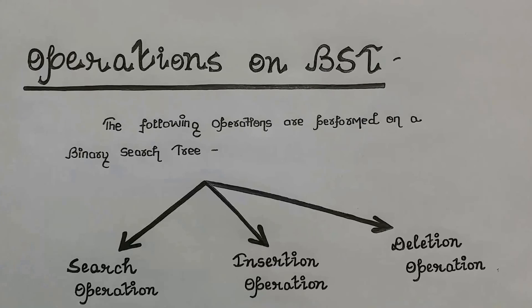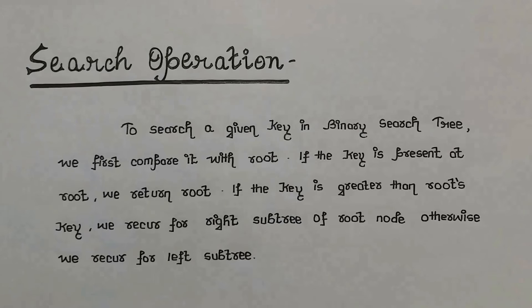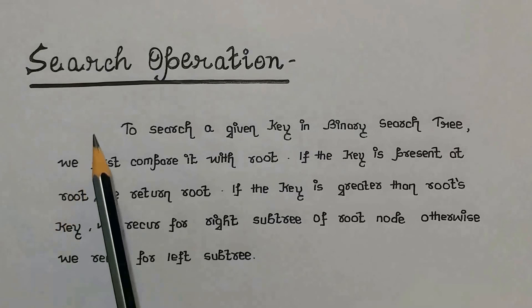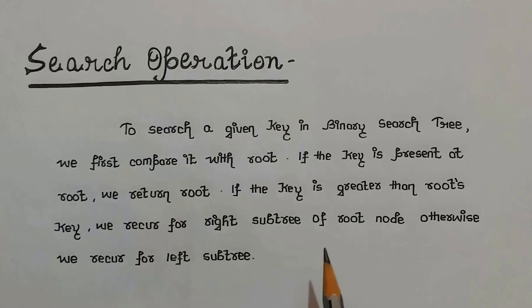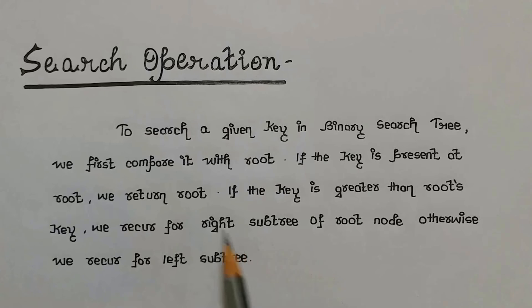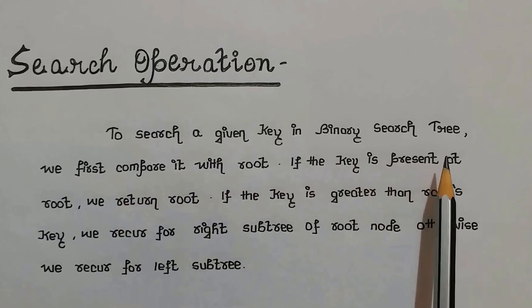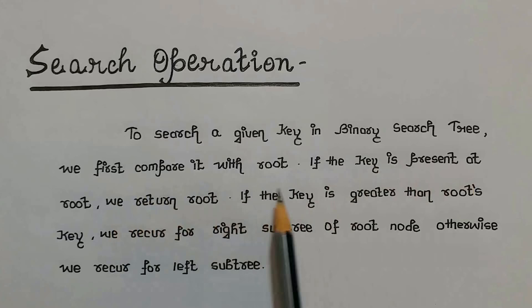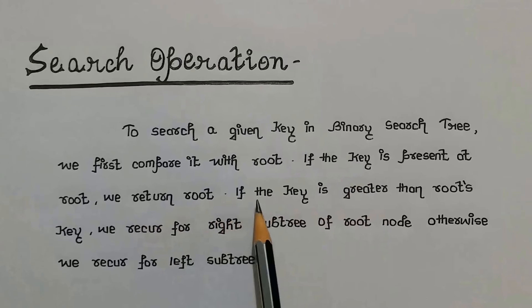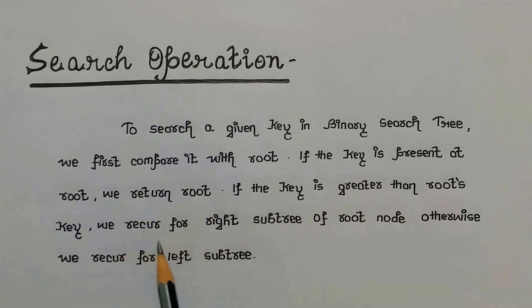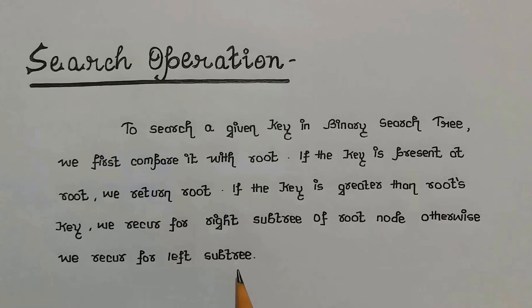Let us start our discussion with the first operation, which is search operation. This is the strategy we will use: to search a given key in a binary search tree, we first compare it with the root. If the key is present at the root, we return the root. If the key is greater than the root's key, we recur for the right subtree of the root node. Otherwise, we recur for the left subtree.